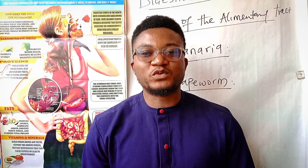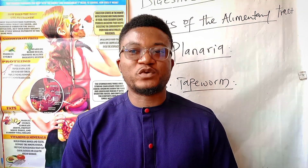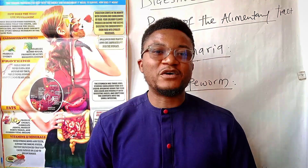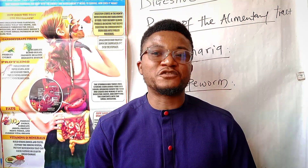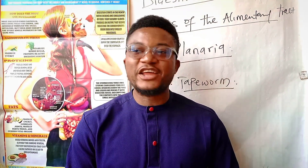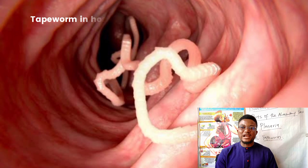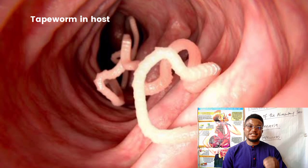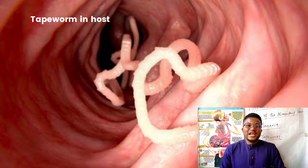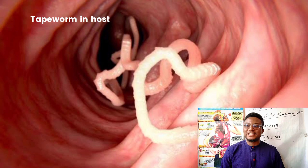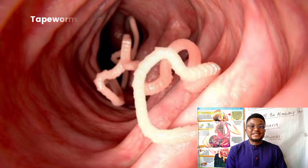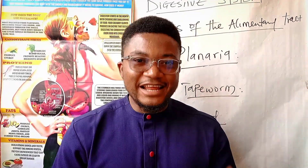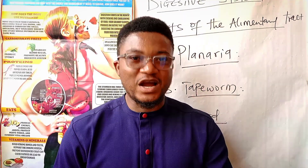The next alimentary tract we are going to discuss is that of the tapeworm. The tapeworm is found in the intestines of some mammals as endoparasites. It has no alimentary tract as it feeds on already digested food. It absorbs the digested food from the host by simple diffusion.